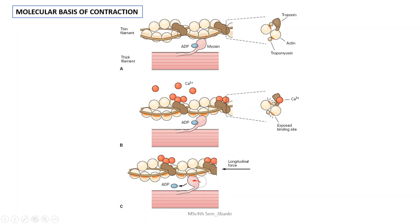Troponin T is mainly responsible for mediating the interaction of tropomyosin with the other components of the thin filament.